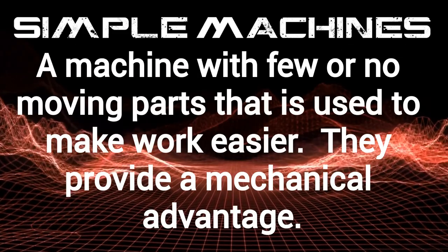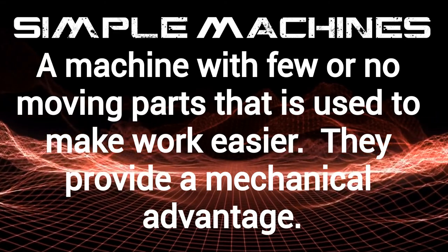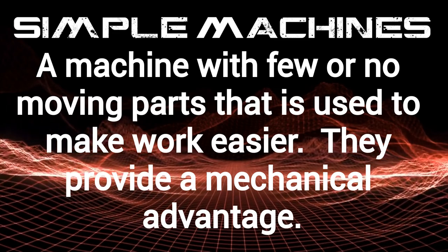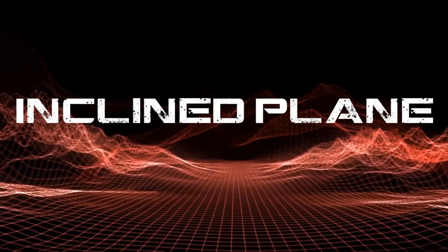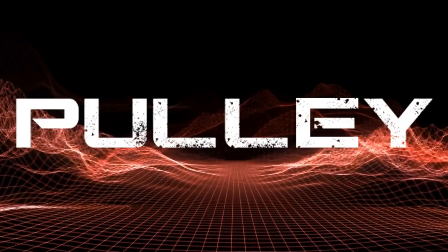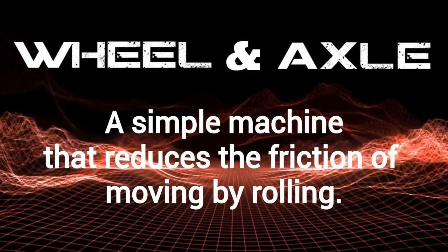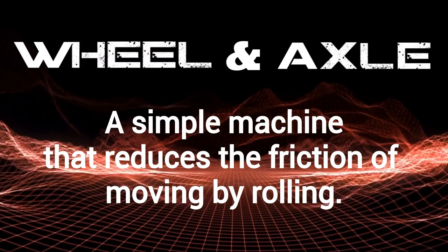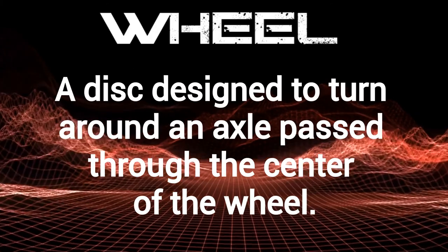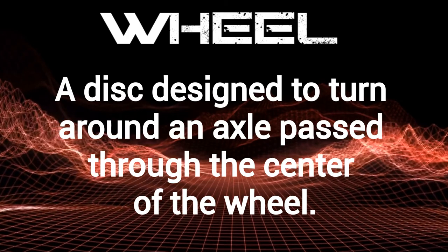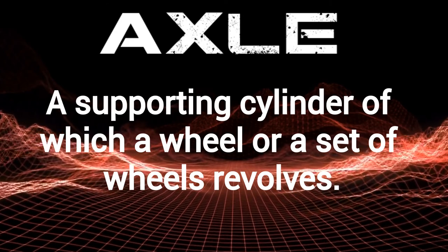Plus, we learned a lot of new STEAM vocabulary. Simple machine: a machine with few or no moving parts that is used to make work easier, provides a mechanical advantage, for example a wedge, wheel and axle, lever, incline plane, screw, or pulley. Wheel and axle: a simple machine that reduces the friction of moving by rolling. A wheel is a disc designed to turn around an axle passed through the center of the wheel. An axle is a supporting cylinder on which a wheel or a set of wheels revolves.